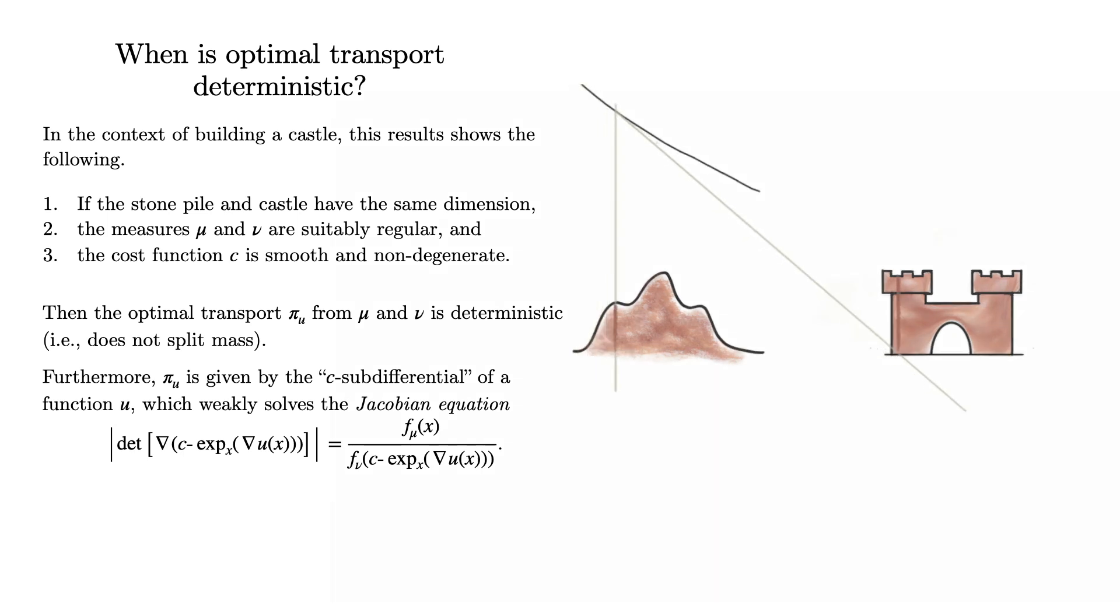Furthermore, the transport is given by the c subdifferential of a potential function u, which satisfies a particular PDE known as the Jacobian equation. Before moving on, there are a few points that I should note. First, the potential shown here is not u, so this should be considered as a heuristic diagram and not a precise picture. Second, for the square distance cost, the c exponential terms which appear in the Jacobian equation correspond to the usual exponential map on a Riemannian manifold. Third, I have not told you what a c subdifferential is. In order to define this concept, we need to discuss some background in convex analysis first. However, the precise definition will not be important for this video, and so you can intuitively think of it as being a generalized version of the gradient, or more precisely the subgradient. Finally, Monge's original cost function does not satisfy the third hypothesis of this theorem, which is one of the main reasons why the square distance cost is preferable.